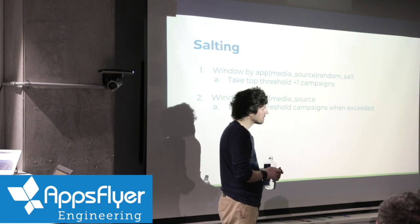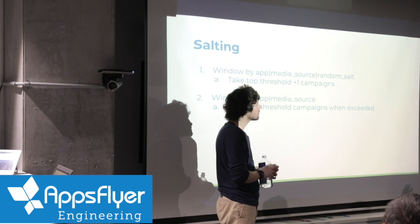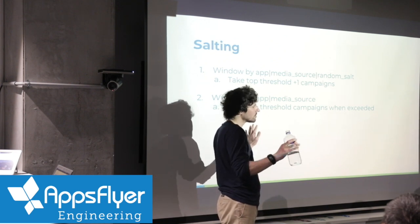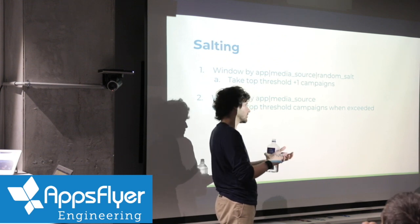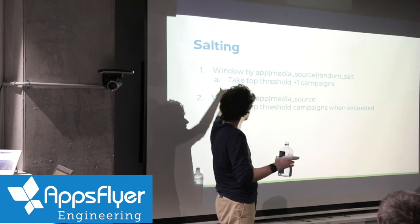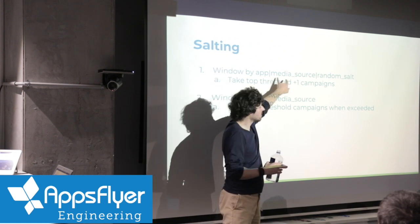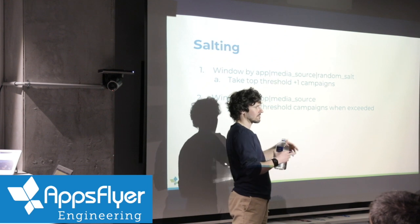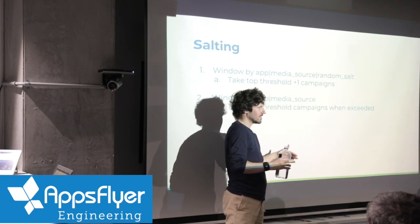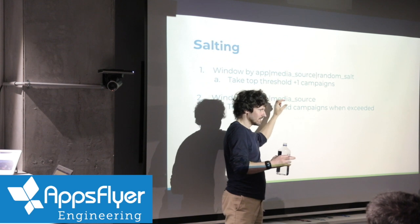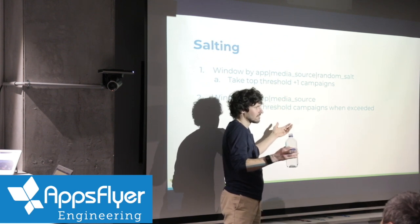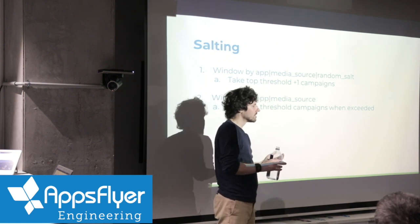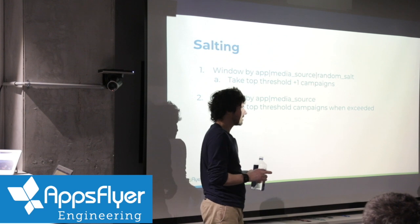Do you salt also the small windows, or only the huge one? You salt everything, so you're doing more work. In the first phase, most app media sources don't exceed the limit anyway, so the first phase just creates more windows there. You sort all their data in all these small windows — they don't exceed because they weren't going to exceed anyway. So again you're creating more work, but you're making it so that you can actually get the problem done.